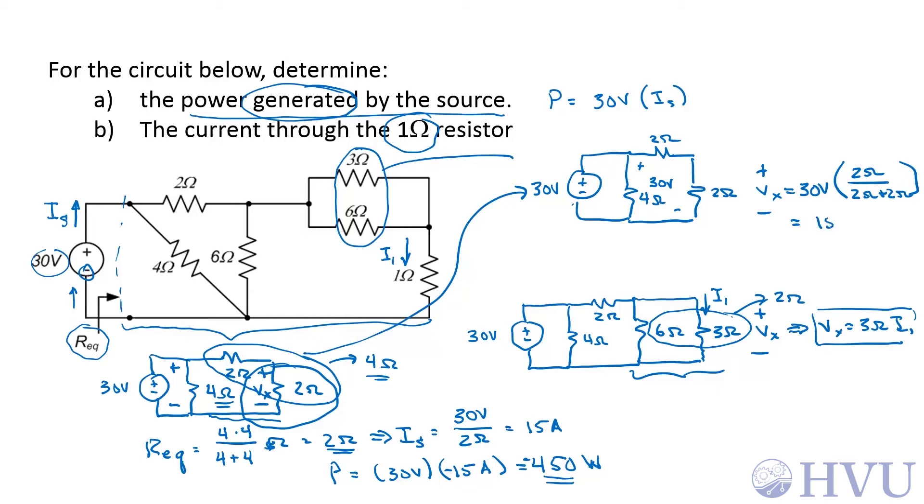So V sub X equals 15 volts. Now I1 from this equation is that voltage V sub X over 3 ohms. So I1 is 15 over 3 amps, which is just 5 amps.